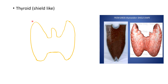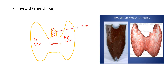Coming to the proper anatomy, the thyroid gland is basically divided into two lobes: the right lobe and the left lobe. The right and left lobes are joined to each other by a structure known as the isthmus. The isthmus sometimes may give an upward projection, and this upward projection is known as the pyramidal lobe, which is also sometimes called the third lobe of the thyroid gland.